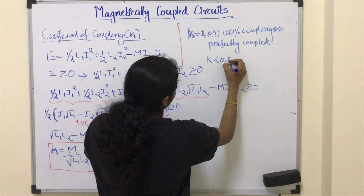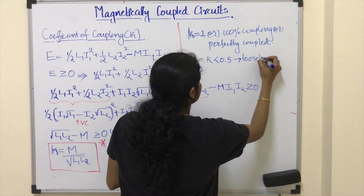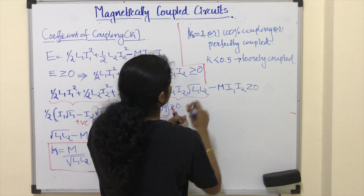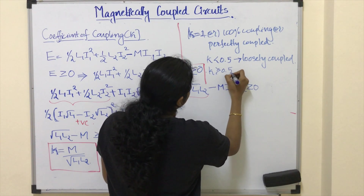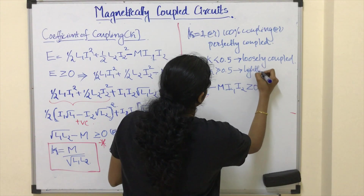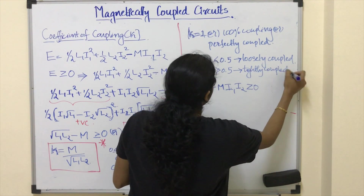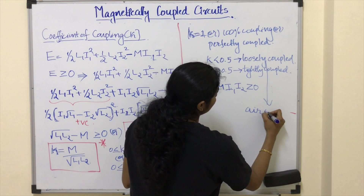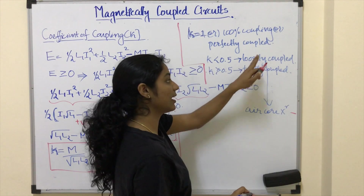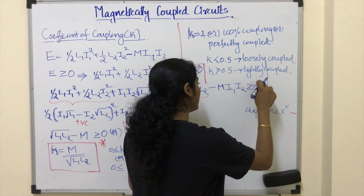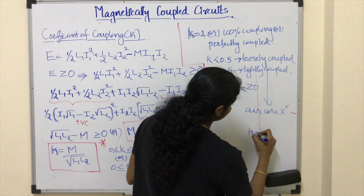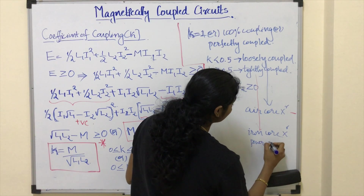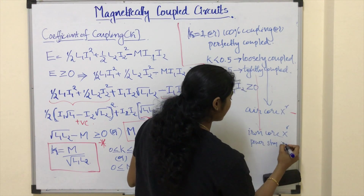If K is less than 0.5, we call it a loosely coupled circuit. If K is greater than 0.5, we call it a tightly coupled circuit. Air core transformers used in radio frequency applications are the best example of loosely coupled circuits, whereas iron core transformers used in power system applications are the best example of tightly coupled circuits.